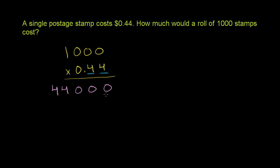So we count from the right. We count 1, 2, stick the decimal right there. So our answer is 440, and these trailing zeros really add nothing there. So 1,000 times 0.44, or 44 cents really, is 440, or it's going to cost us $440 to buy 1,000 stamps.